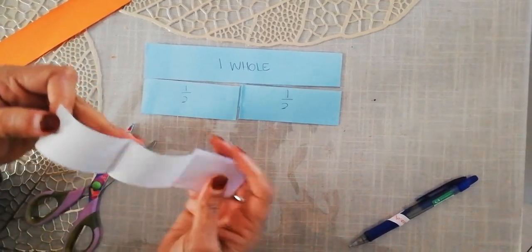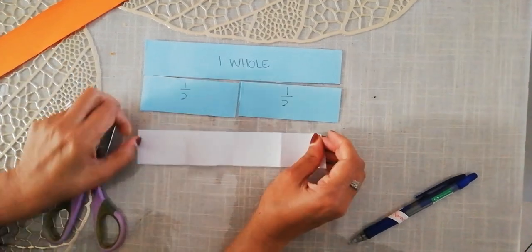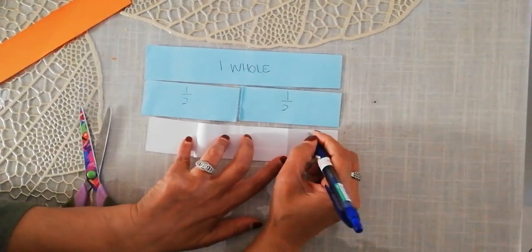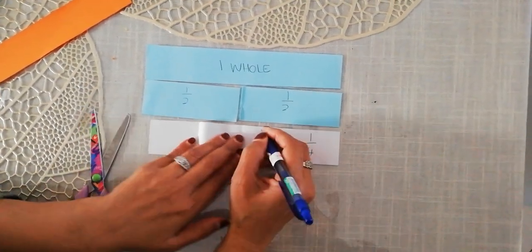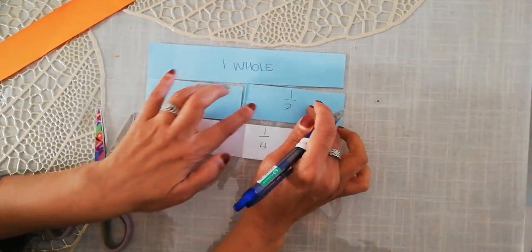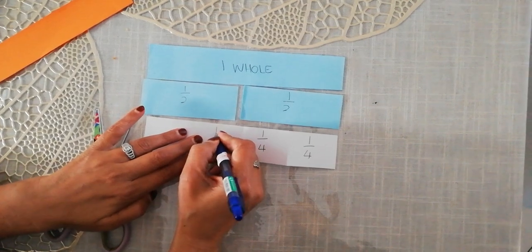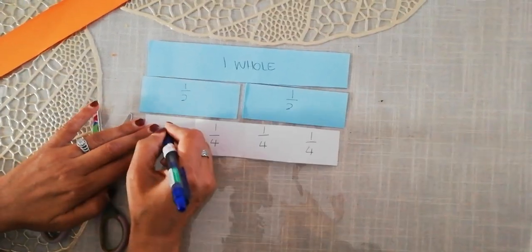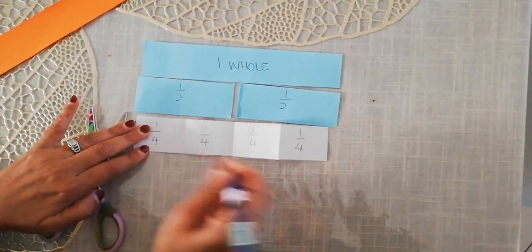If you didn't cut it up as well, if you left it just like this here, and you wrote quarters, also fine. The whole idea is for you to be able to see that two quarters make a half. Two halves make a whole. So that will give me quarters.